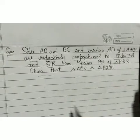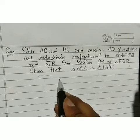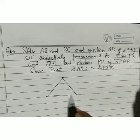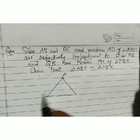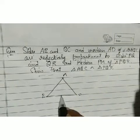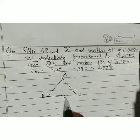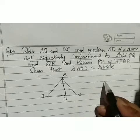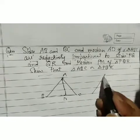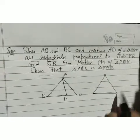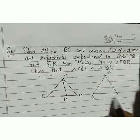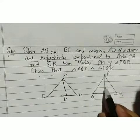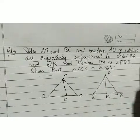First, we draw the figure. We have triangle ABC where D is the median point, and triangle PQR where PM is the median.